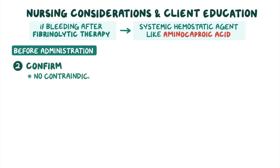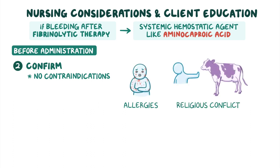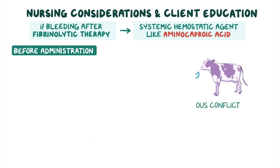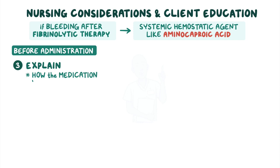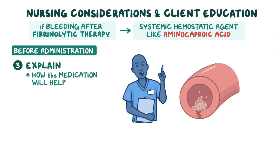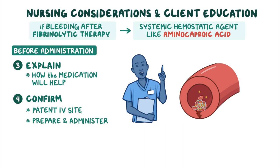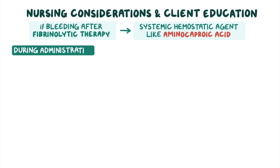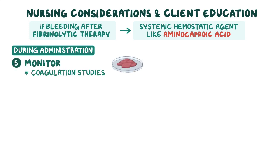Review the client's laboratory test results including CBC, CPK, BUN, and creatinine, along with coagulation studies. Confirm there are no contraindications such as allergies or religious conflict. Explain to the client how the medication will stop their bleeding by counteracting excess fibrinolysis, allowing the body to form a clot effectively. Confirm the client has a patent IV site and prepare and administer the medication as ordered.